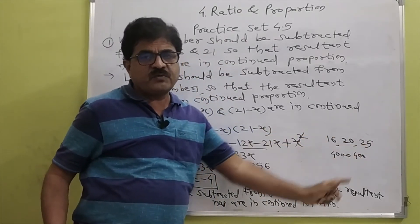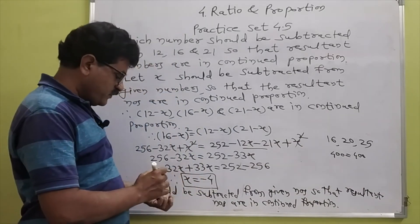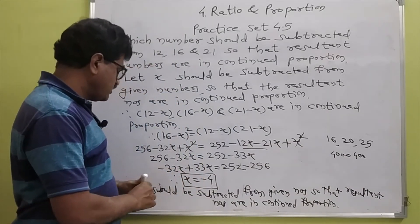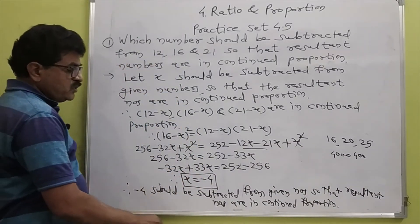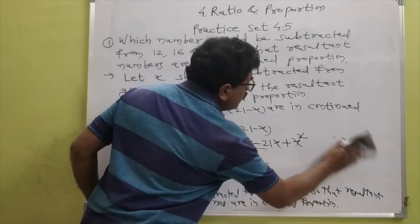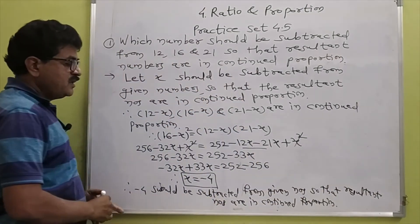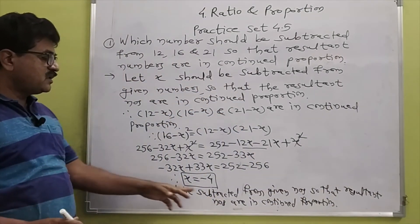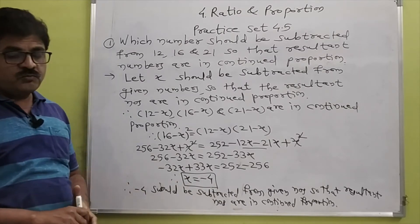Therefore our answer is: minus 4 should be subtracted from the given numbers so that the resultant numbers are in continued proportion.